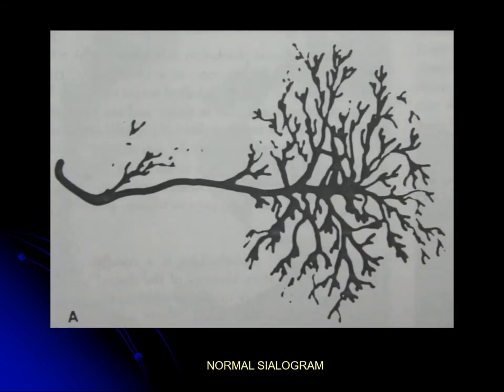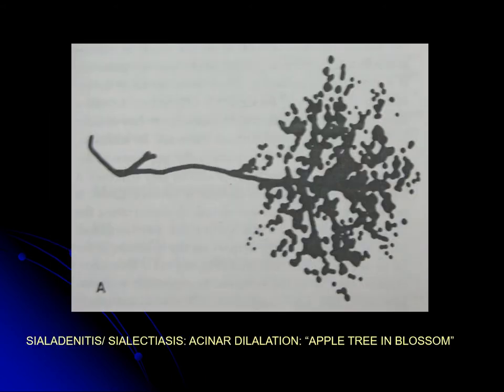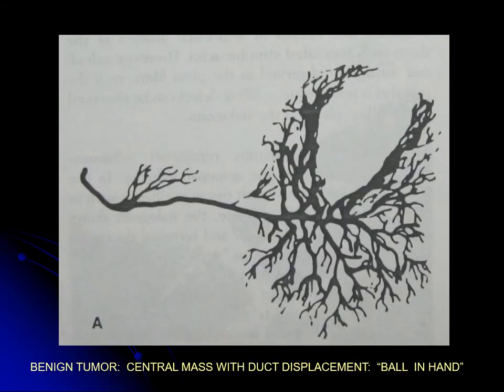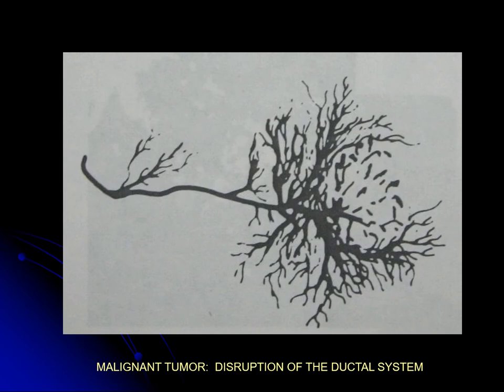In a normal sialogram, a tree-like branching pattern is visible. In sialadenitis, an 'apple tree in blossom' pattern appears due to depletion and irregularity of the ductal tree. In a benign tumor, ductal displacement is seen — the 'ball in hand' appearance. In malignant tumors, rupture and destruction of the ductal system occurs, changing the normal pattern.